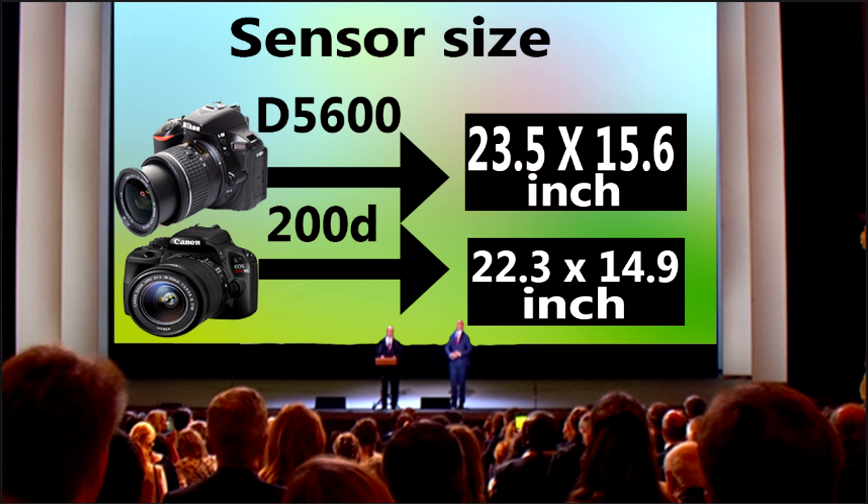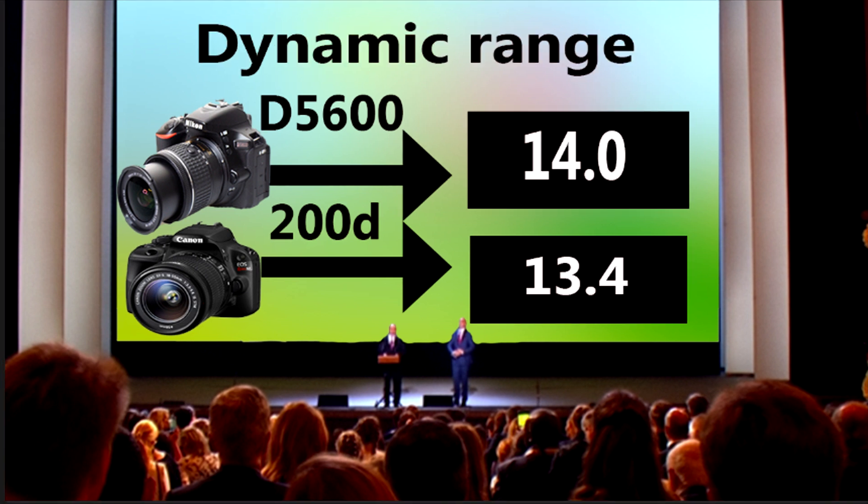The seventh advantage of the Nikon D5600 over the Canon 200D is dynamic range — Nikon gives you 14.0 dynamic range versus Canon 200D's 13.4 dynamic range.